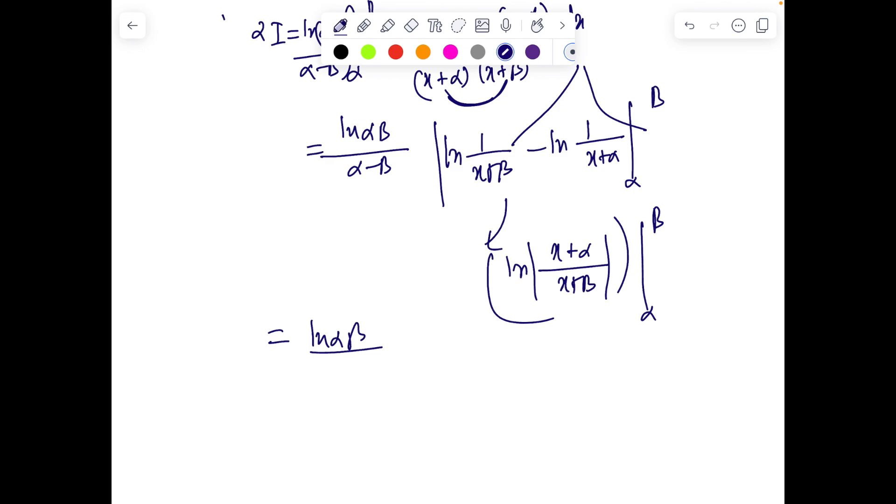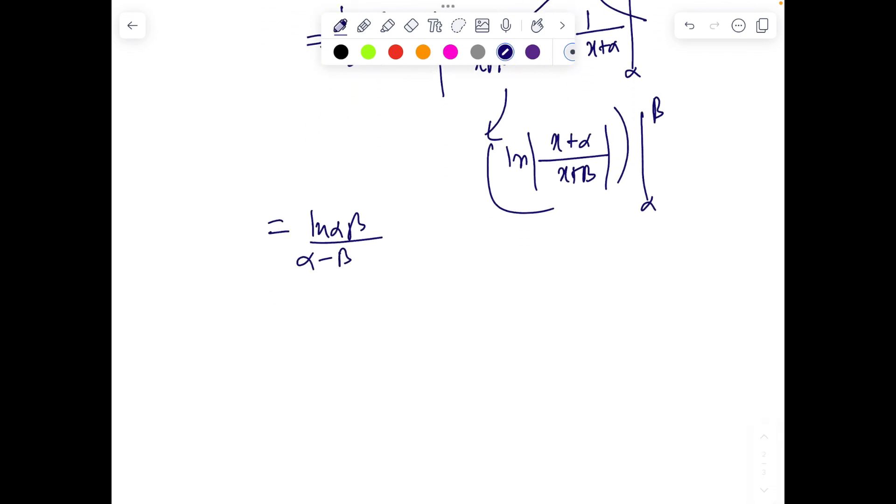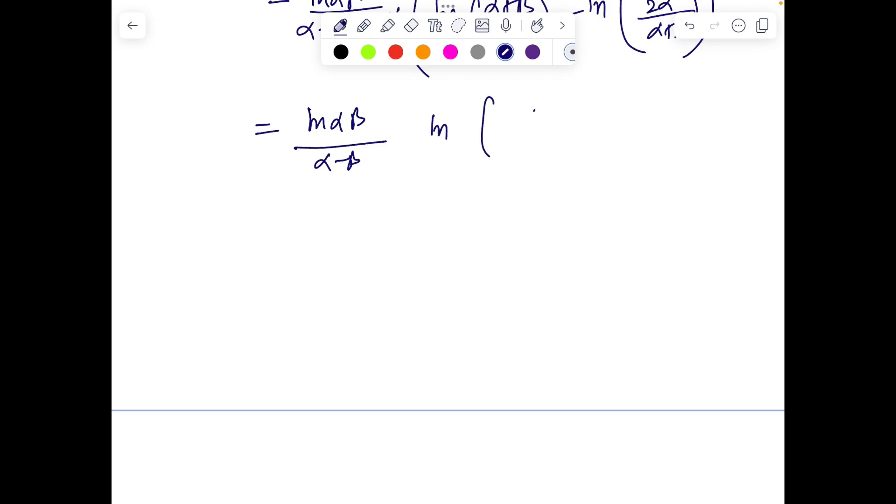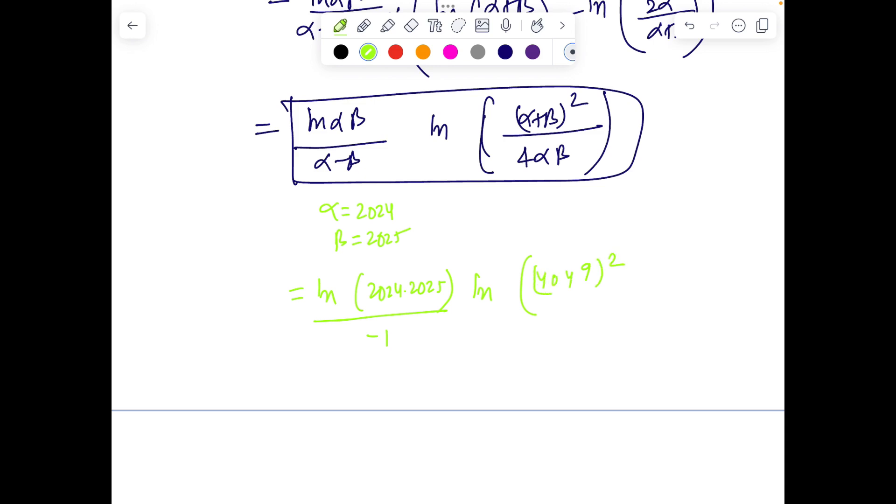Finally we get ln(αβ)/(α - β) times [1/(x + β) ln((α + β)/2β) - ln(2α/(α + β))]. This quantity gives you ln((α + β)²/4αβ). So the answer is (4049)²/(4 × 2024 × 2025).